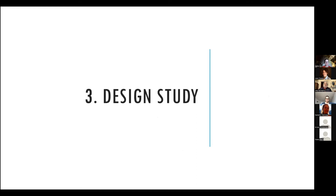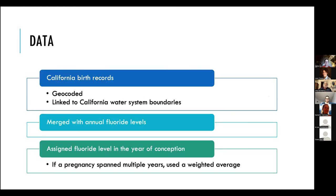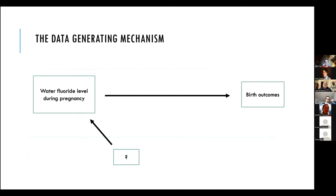Next, we design the study. For this study, we're using birth records for the state of California. We have good reason to believe we have the entire population of births that occurred to California residents, which limits the possibility that some selection mechanism might be influencing our results. The birth records were geocoded to the pregnant person's address at the time of delivery and then linked to the water system boundaries, assigning the pregnancy the average fluoride level in the community water system during the gestational period. If the pregnancy spanned multiple years, we created a weighted average. By carefully examining our data generating mechanism, we can design the study to be as robust to sources of potential bias as possible.